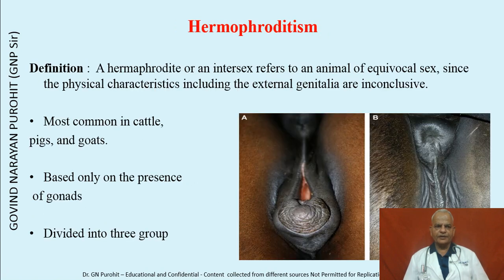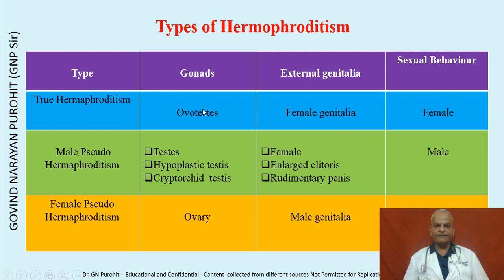A hermaphrodite or intersex refers to an animal of equivocal sex since physical characteristics including the external genitalia are inconclusive. It is most common in cattle, pigs, and goats, and is divided into three groups based on the presence of gonads. True hermaphroditism has ovotestes; external genitalia and sexual behavior are female. Male pseudohermaphroditism has testes, hypoplastic testes, or cryptorchid testes; external genitalia are female-like with an enlarged clitoris and rudimentary penis, but sexual behavior is male-like. Female pseudohermaphroditism has an ovary with male genitalia and female sexual behavior.